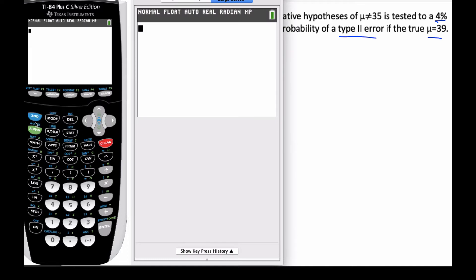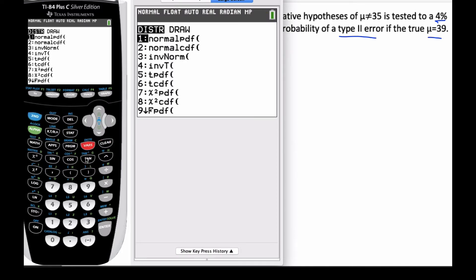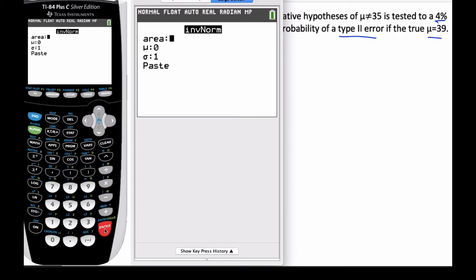I can find them if I go to inverse normal, because inverse normal, if I'm given the area, will find me the value. So my area is going to be 0.02, my mean is 35.